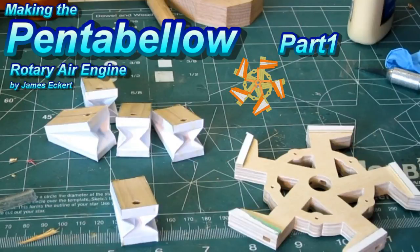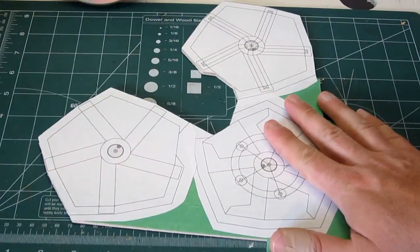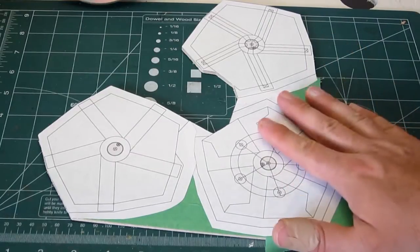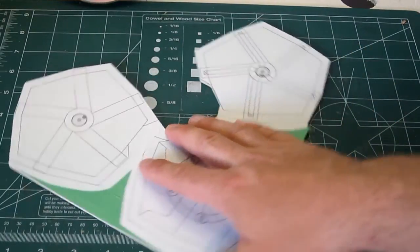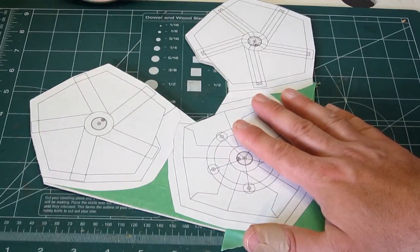The PentaBello Rotary Air Engine. This engine is based on the concept seen in some early aircraft where the engine block rotates around a stationary crankshaft. This project will combine several of my building techniques to create what should be my most ridiculous engine yet.